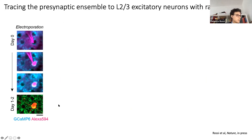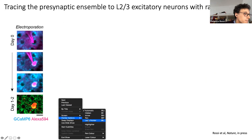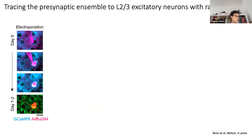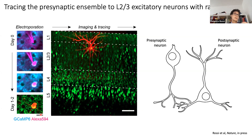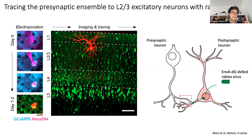The neuron is electroporated with a red fluorescent protein DS-RED and the molecular toolkit for rabies tracing. The target postsynaptic neuron is beautifully visible in a sagittal Z-stack acquired in vivo in the cortex of a mouse that expresses the indicator GCaMP6 in all neurons. When I inject the DS-RED expressing rabies virus, the rabies virus can only infect this target postsynaptic cell. It replicates inside the neuron and travels retrogradely to specifically spread across synapses to the presynaptic inputs sending connections to the postsynaptic dendrites.